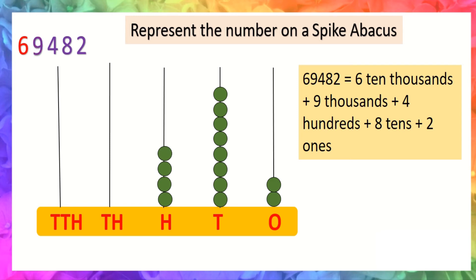So we will draw nine beads: one, two, three, four, five, six, seven, eight, nine. At ten thousands place the digit is six.